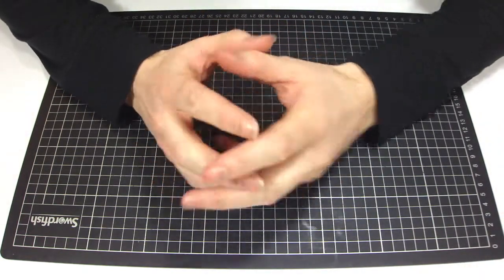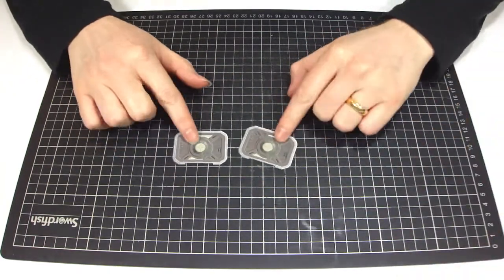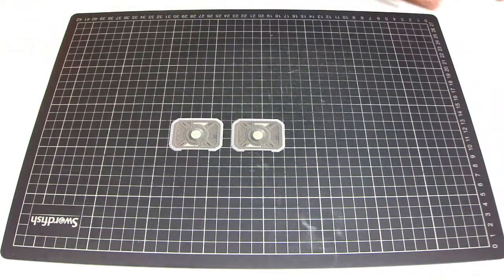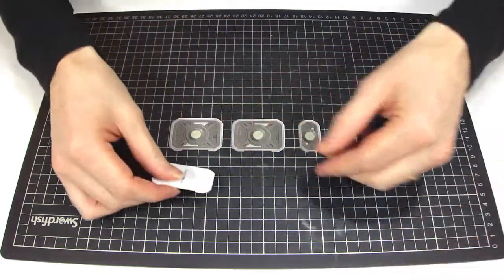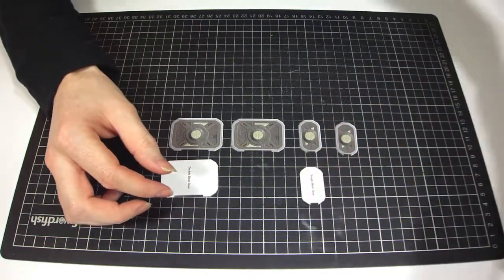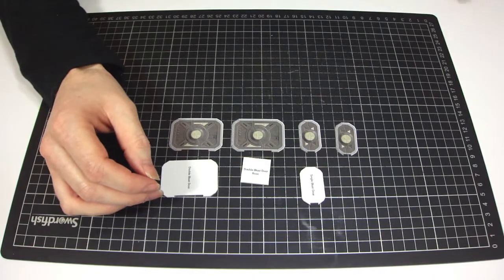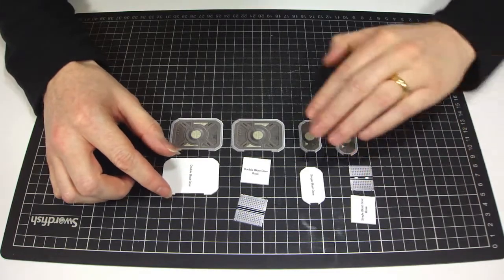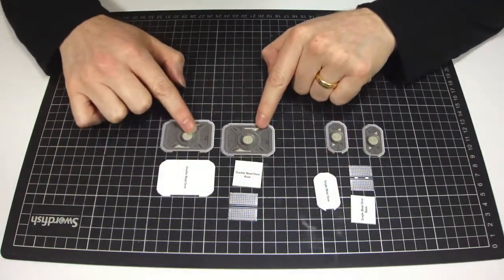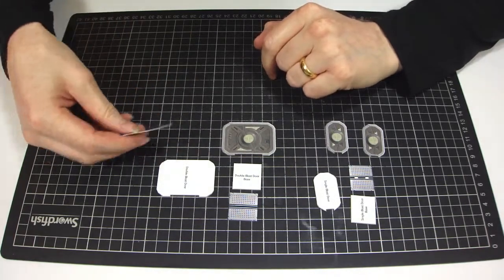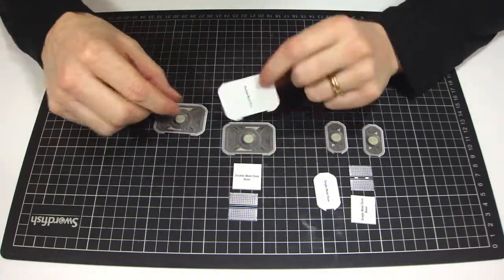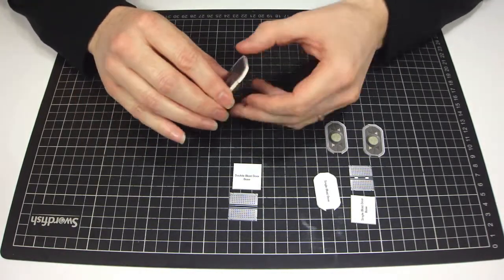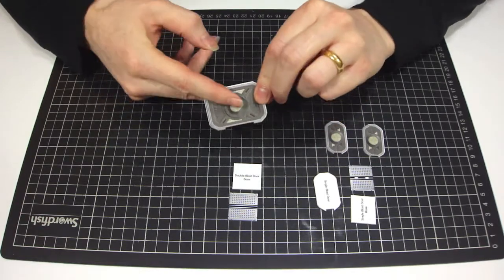First of all, the parts. The blast doors are pretty much the same if they're a single or a double blast door. The process is the same, it's just the base which is very slightly different. So single door, double door, with these it's really quite simple. All you basically do is your internal support, one on one side, one on the other, and that gives you your double side.